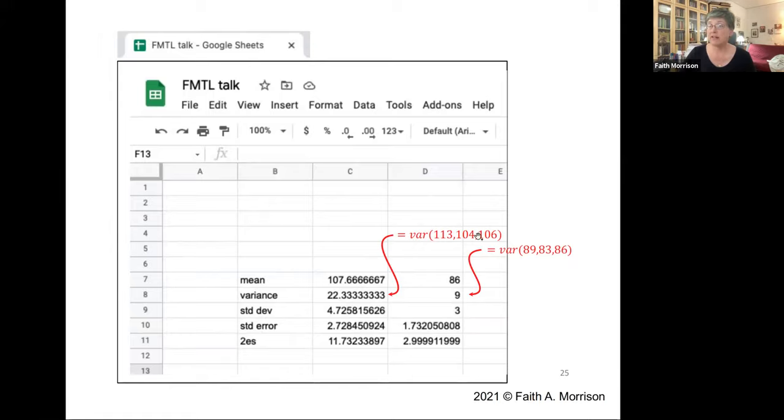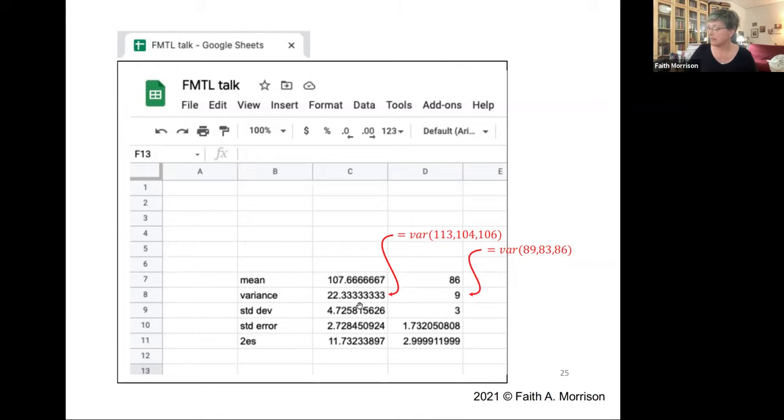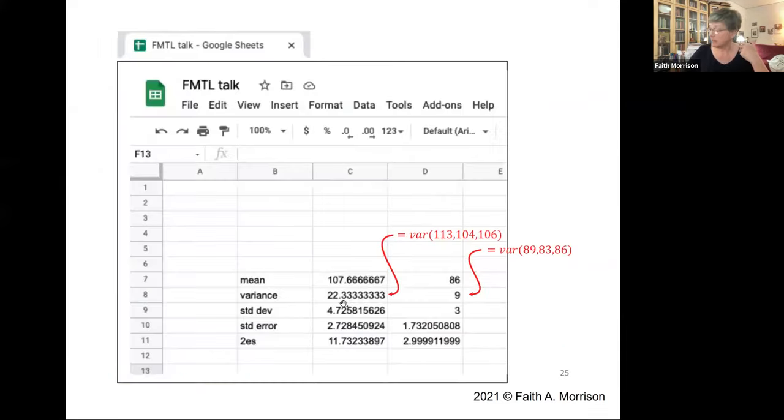The standard deviation is just half of the variance, but you can also calculate it with a built-in function, et cetera. So this spreadsheet has the sample variance, the sample standard deviation, the standard error, which is derived in my book as the standard deviation divided by the square root of the number. And then you can calculate the blood pressure with its appropriate error limits.